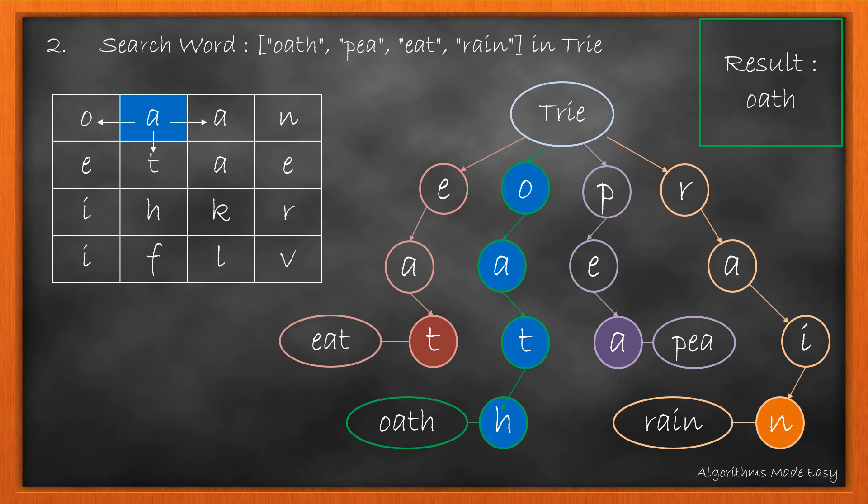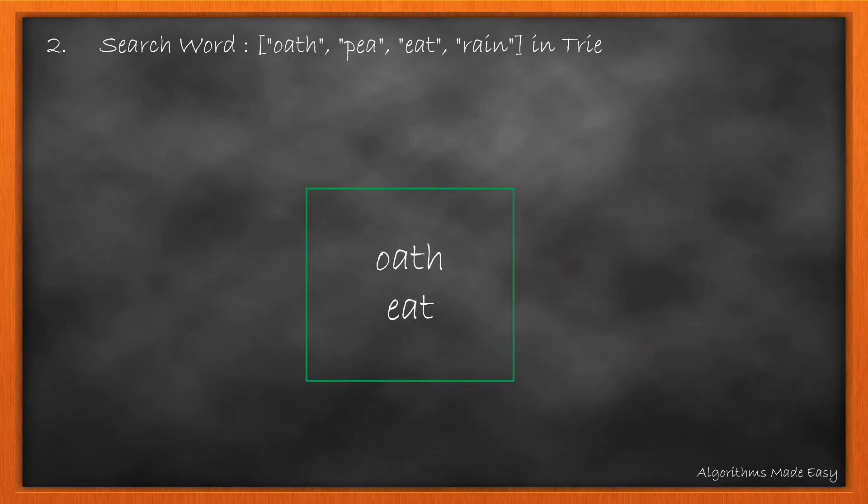we keep moving through the board. While continuing this process on the input board, we will also find the word EAT. So we will add it to the result list. At the end, we will return our result list.